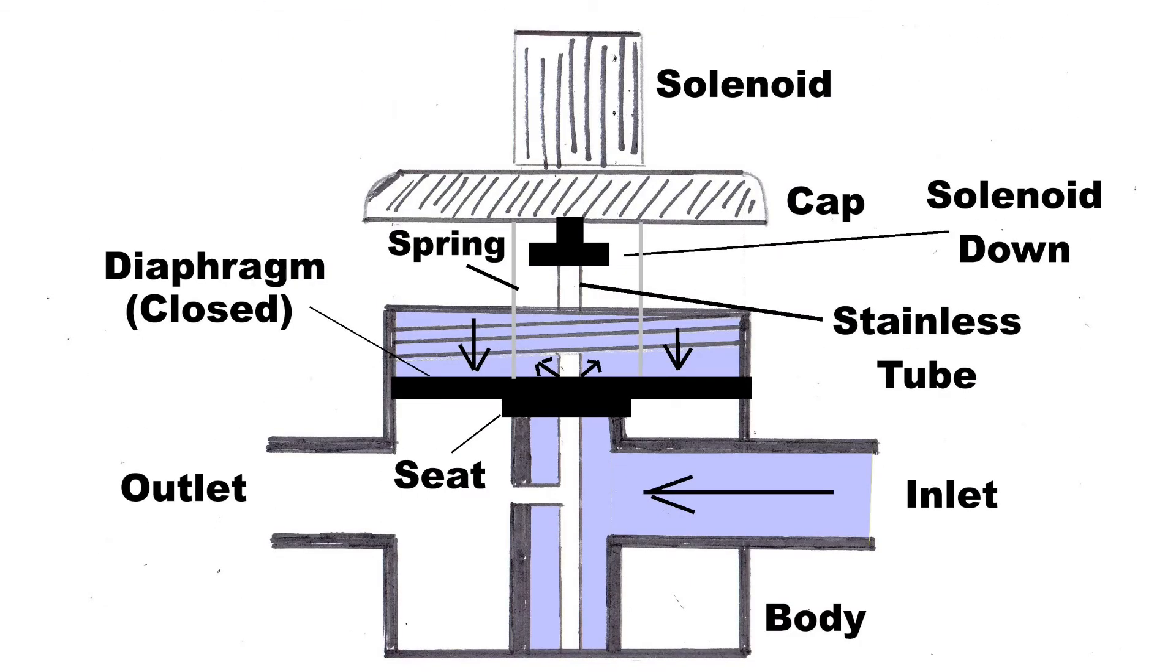Once the solenoid plunger drops back down and blocks the tubing outlet, the pressure between the top and the bottom of the valve equalizes quickly, and the spring helps to force the diaphragm down on the seat.